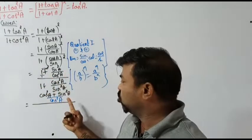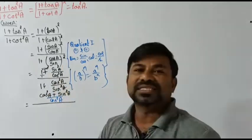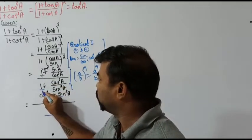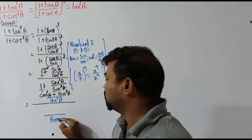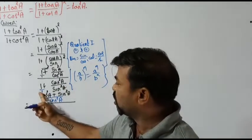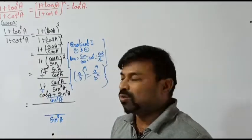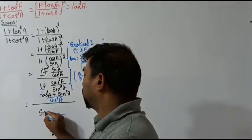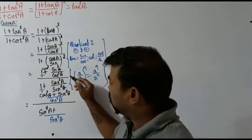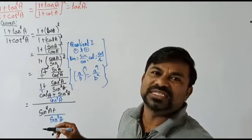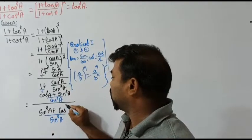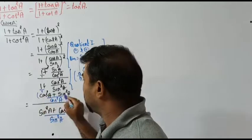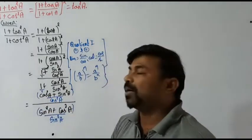Similarly, take the LCM in the denominator. The LCM of sine square a and 1 is sine square a. One into sine square a gives sine square a, and sine square a goes into sine square a once, giving cos square a. So the denominator becomes sine square a plus cos square a, all over sine square a.